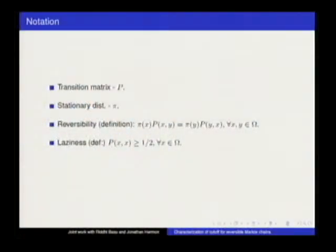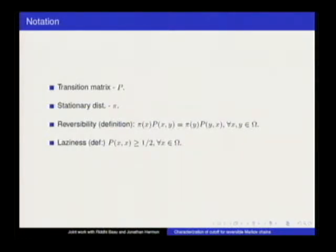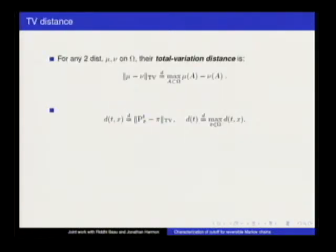First, just the setup. We have a reversible Markov chain. P is the transition matrix. Pi is the stationary distribution. We're going to focus on the reversible case, and we could work either in continuous time or with lazy chains—those are equivalent. For concreteness, let's assume the chains are lazy; we need something to avoid periodicity issues. Our criterion for mixing, as usual, will be total variation distance. D(T) denotes the maximum total variation distance of the distribution at time T to pi, maximizing over the initial state.